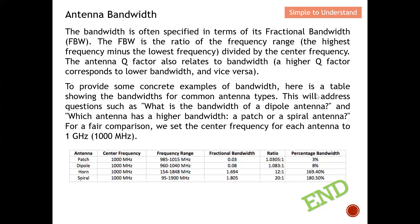To provide some concrete examples of bandwidth, this table shows the bandwidth for common antenna types — patch, dipole, horn, and spiral antenna — with the center frequency set at 1 GHz for fair comparison. These are all the fractional bandwidths, and from here you can see that the spiral antenna has the largest bandwidth.